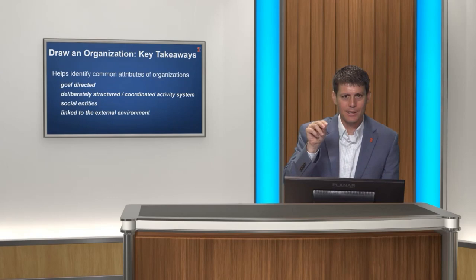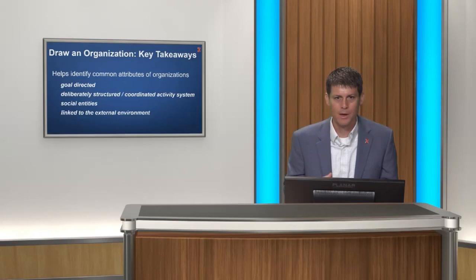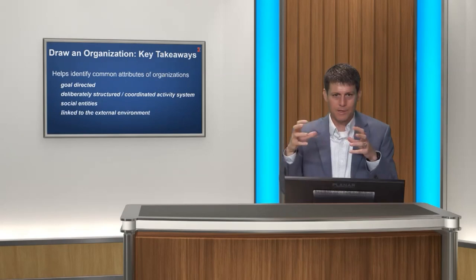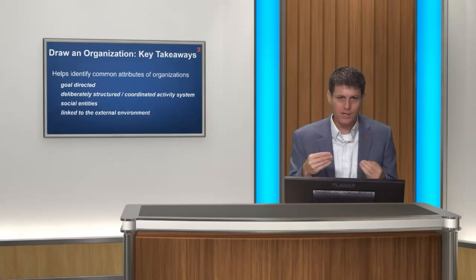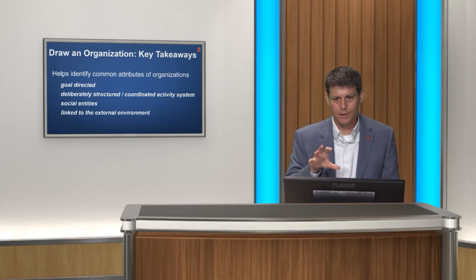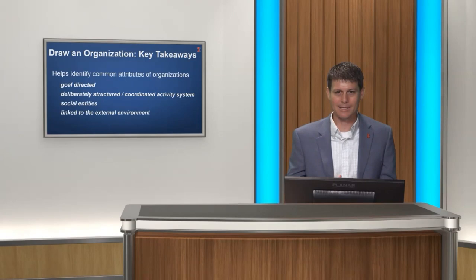A couple of things: one, a lot of times the drawings have some sense of an organization being goal-directed — there's some purpose that the organization exists to try and achieve. Organizations aren't just chaos. Even though sometimes life feels pretty chaotic within an organization, there's some deliberately structured activity system — there's some method to the madness, some attempt to put structure around the different parts of what an organization is trying to do. Organizations are social entities — we saw that with the locked arms — ultimately organizations are about people and the interactions that happen among them. And organizations don't exist in a vacuum: they're linked to the external environment.